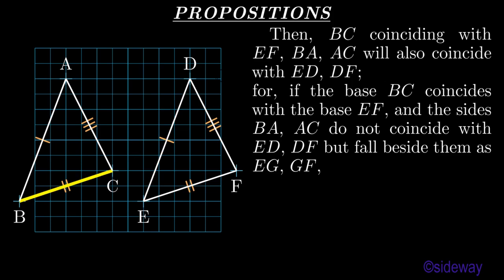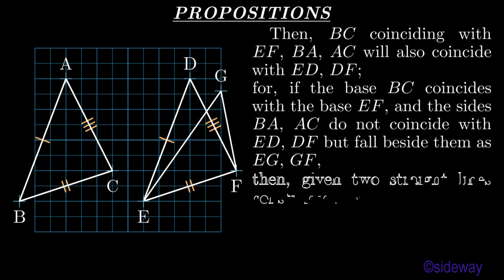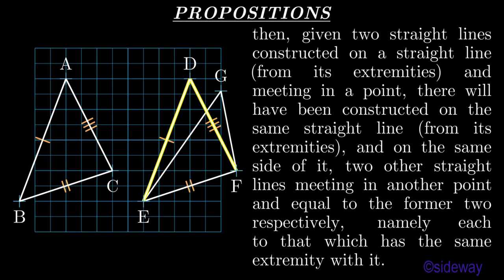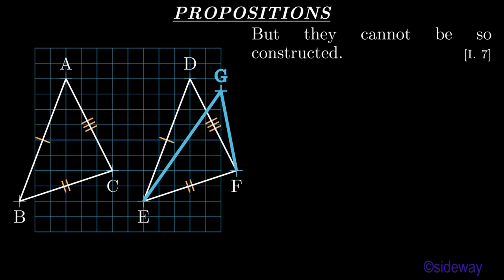For if the base BC coincides with the base EF and the sides BA, AC do not coincide with ED, DF but fall beside them as EG, GF, then given two straight lines constructed on a straight line from its extremities and meeting in a point, there will have been constructed on the same straight line, from its extremities and on the same side of it, two other straight lines meeting in another point and equal to the former two respectively, namely each to that which has the same extremity with it. But they cannot be so constructed, by Book 1 Proposition 7.